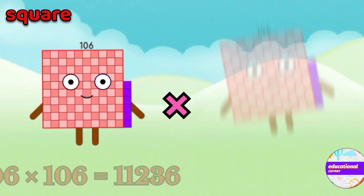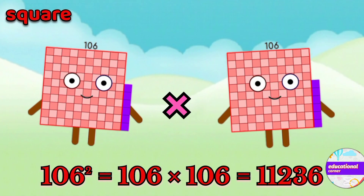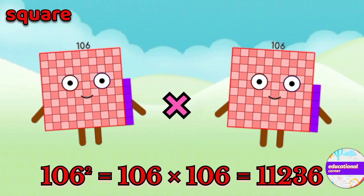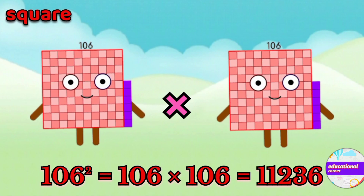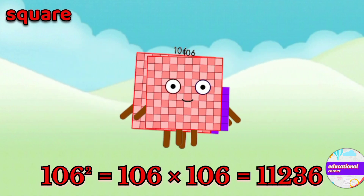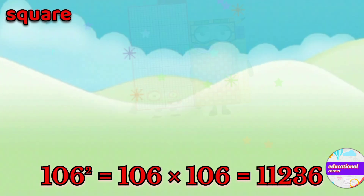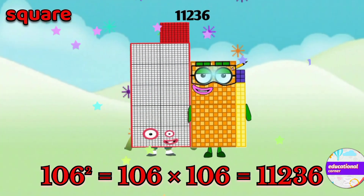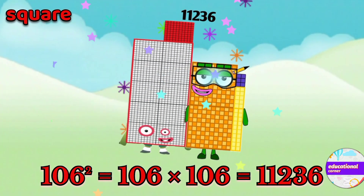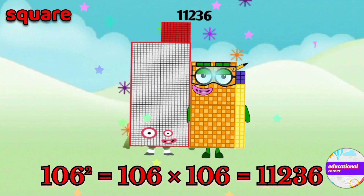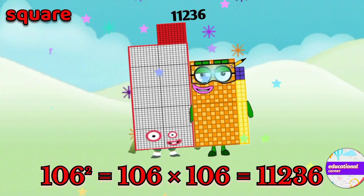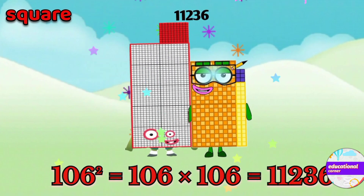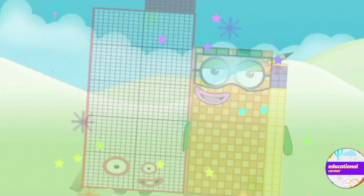106 multiply by 106, so the square of 106 is eleven thousand two hundred and thirty six.